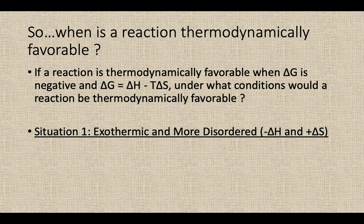What we're going to look at in the next few slides is when a reaction is going to be thermodynamically favorable. If we think about that Gibbs free energy equation, it's a combination of both the enthalpy of the reaction, delta H, and the entropy of the reaction. There's a delicate balance between delta H and delta S to determine the sign of that delta G value. We're going to look at which conditions a reaction would be thermodynamically favorable.